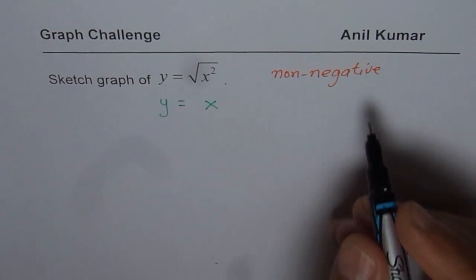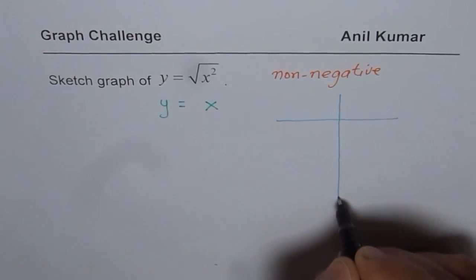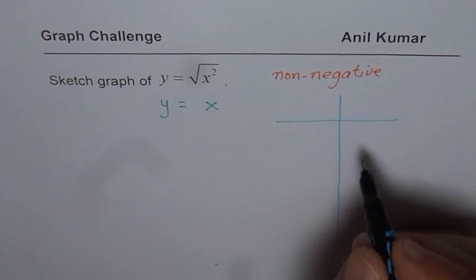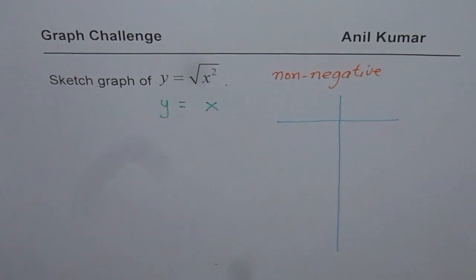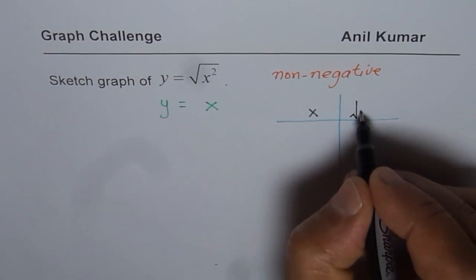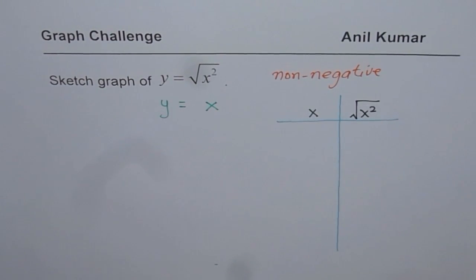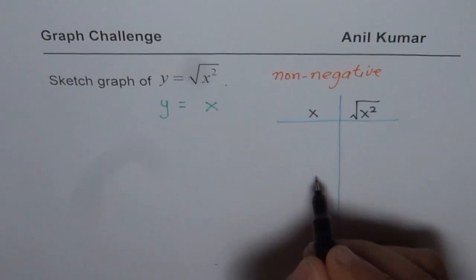So now, what I will do here is kind of make a table of values, right? So that will help you to understand the concept even better. So let us take some x values and calculate square root of x squared, right? So that should be good. So let us begin with positive numbers to start with.